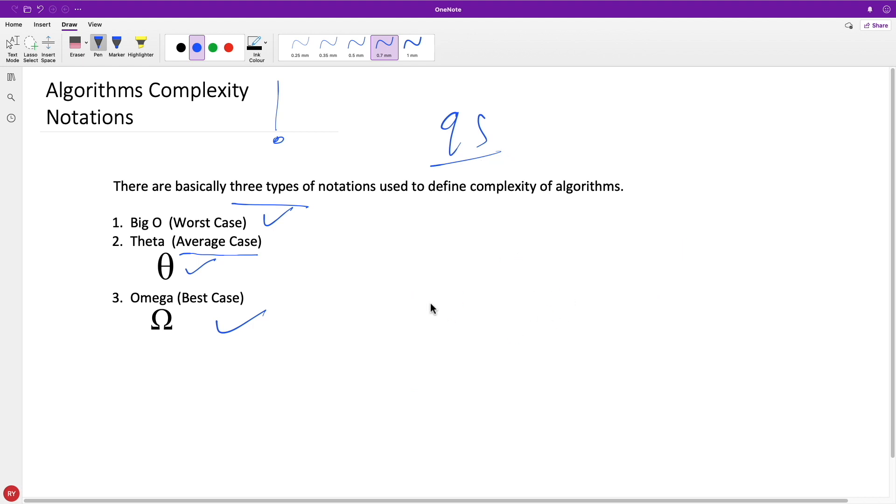The n log n is not the worst case complexity. Big O notation is for worst case, and n log n is not correct. Actually, the average and best case is n log n, but the worst case of quicksort is order of n square.